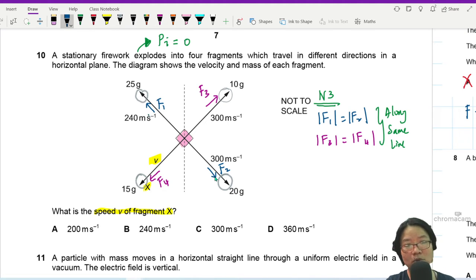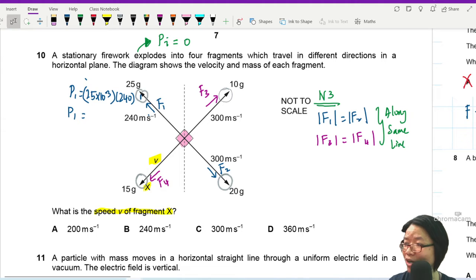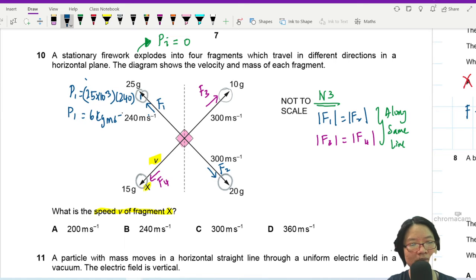Let's check. What is the momentum? I did label this one as 1. So what is P1? To find P1, I can take 25 times 10 to the power of negative 3, multiply by 240. That's how I find the momentum. Because I got extra values, I can check. This is 6 kg meter per second. Interesting. Let's find P2.